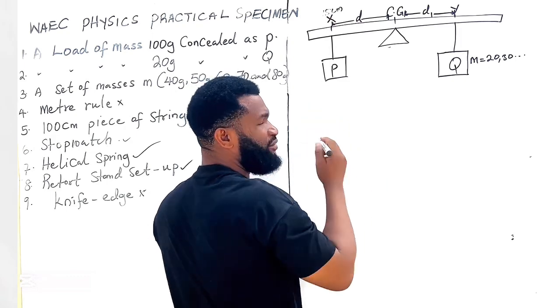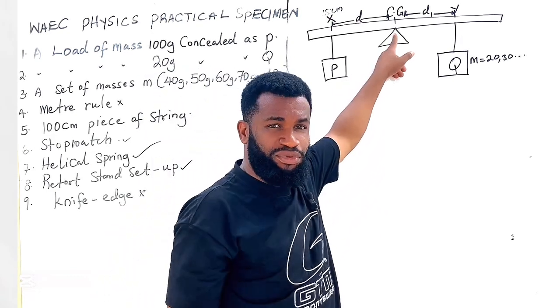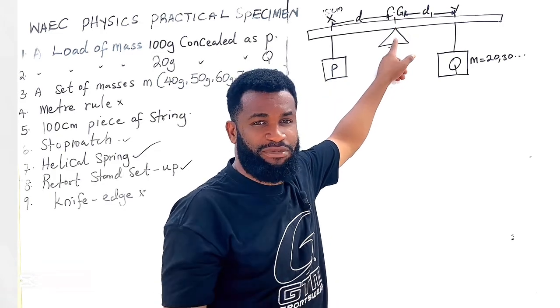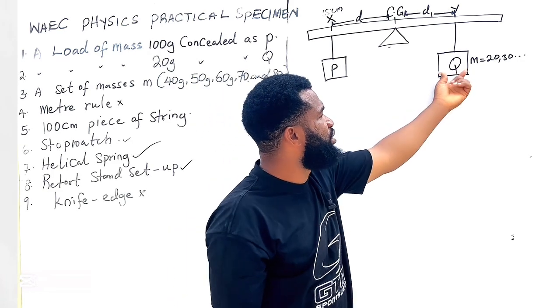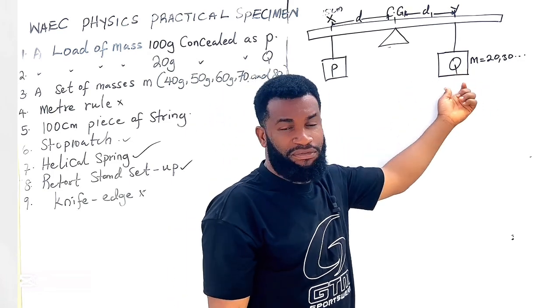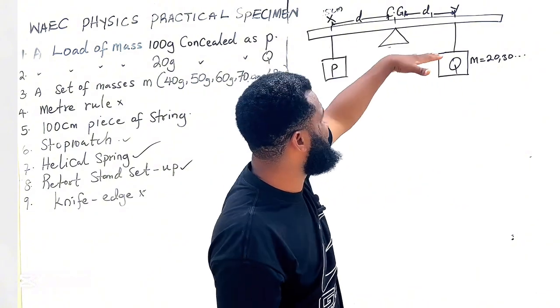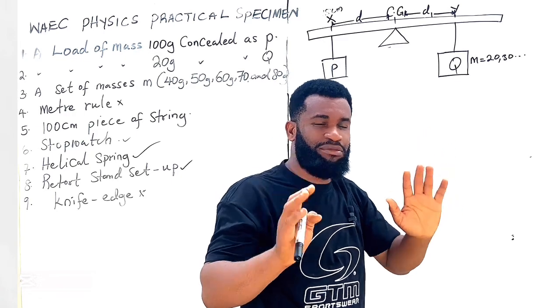So WAEC will likely tell you to keep P at a particular length, let's say 15 cm throughout the experiment, and they may also ask you to put the knife edge at the center of gravity throughout the experiment. So you will not change this and you will not change this, but what you do is you're going to be moving the value of Q.